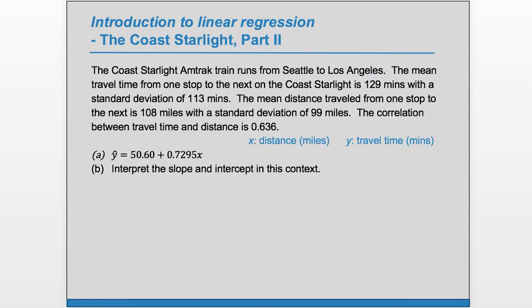Part B: Interpret the slope and intercept in this context. So we'll start with the slope. The slope here is positive 0.7295, and we recall the slope is change in y over change in x. In this case, that means change in time over change in distance.